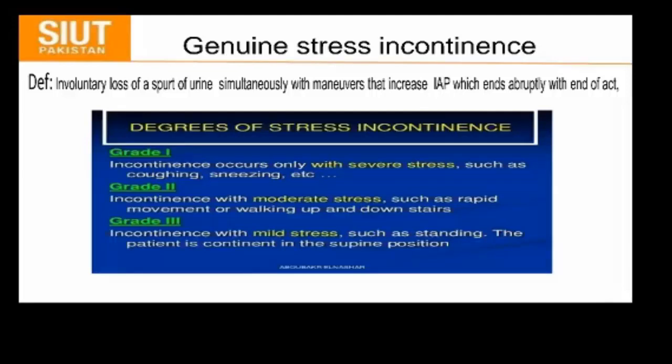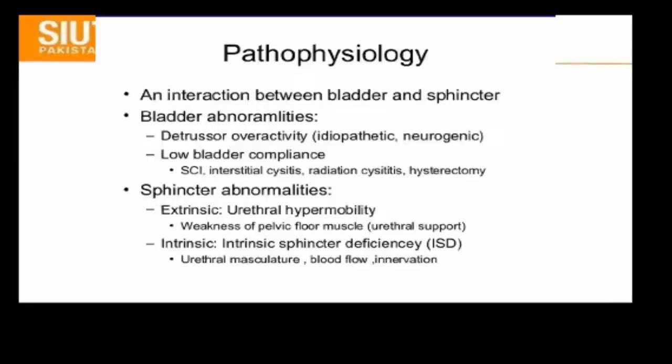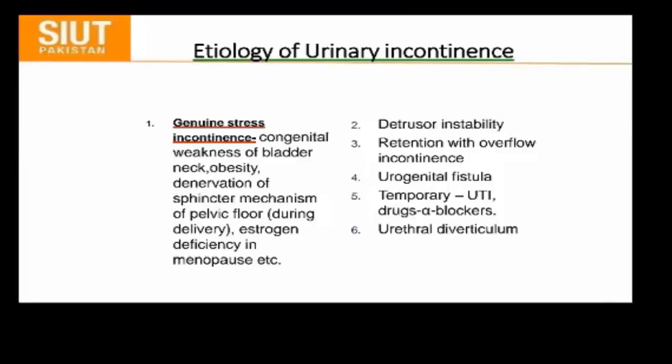Regarding grading of stress incontinence: Grade 1 involves only major stress such as coughing; Grade 2 involves moderate stress such as rapid movement or walking up and down stairs; Grade 3 involves minimal stress such as standing. The aetiologies of genuine stress incontinence include weakness of the bladder neck, obesity, inversion of speed mechanism, family history, oestrogen deficiency in menopause, detrusor instability, retention with overflow incontinence, urogenital fistula, and drugs like alpha blockers.